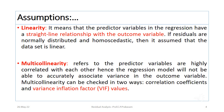Another assumption is linearity. It means that the predictor variables in the regression have a straight-line relationship with the outcome variable — that is the dependent variable. If residuals are normally distributed and homoscedastic, then it is assumed that the data set is linear.